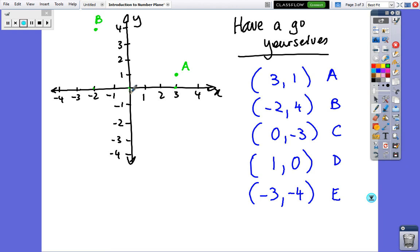0 is in the middle, minus 3 is down there, so that's point C. 1 and no height, so that's the point D. Minus 3 and then minus 4 is down there, so that's the point E.